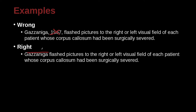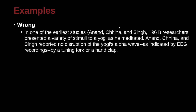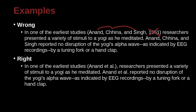In one of the earliest studies, Anid, Sheena, and Sine, 1961, researchers presented a variety of stimuli to a yogi as he meditated. Anid, Sheena, and Sine reported no disruption of the yogi's alpha wave as indicated by EEG recordings by a tuning fork or a hand clap. There are two problems here: the year is wrong for MLA, and we have three authors. In MLA style, if you have three or more authors, you use 'et al.' even the very first time in the paper — which is different from APA. There's no page number here because we're looking at the overall paper.